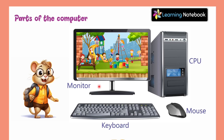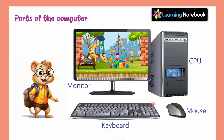Look here — this is a computer and it has different parts. I'm sure you must have seen such a computer either at your school or at your home. This part is known as the monitor. Then here we have the keyboard. Here is the CPU. And here is the mouse — the one I just mentioned in the fact, that the first computer mouse was made of wood. Now I'm going to tell you about each and every part of this computer in detail.